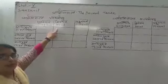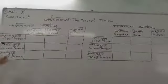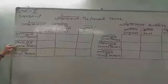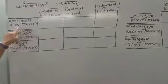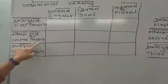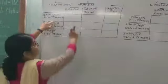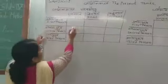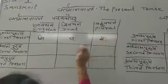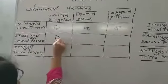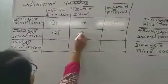So we will go for Vartman Kaar. The suffixes of Vartman Kaar Parasmaipada: we have Uttama Purush, Madhyama Purush, and Anya Purush. Uttama Purush means first person, Madhyama Purush means second person, and Anya Purush means third person. For Uttama Purush, Ek Vachan suffix is 'mi', then 'vah', then 'mah'. For Madhyama Purush: 'si', 'thah', 'thah'. For Anya Purush: 'ti', 'thah', 'ante'.